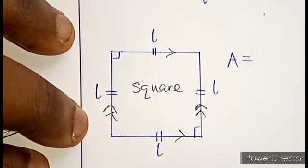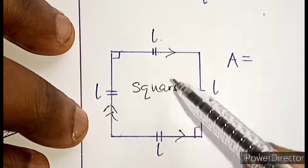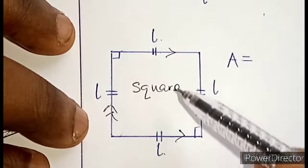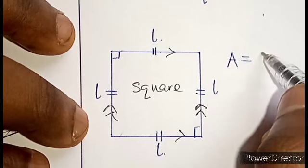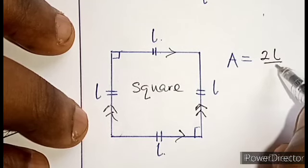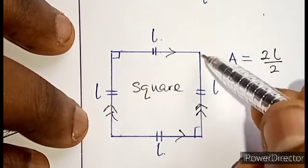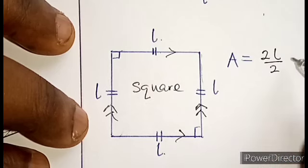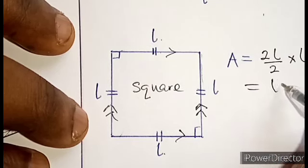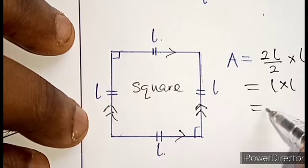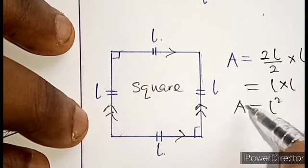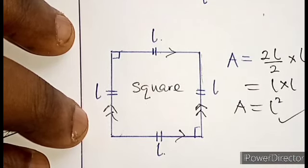If you want to bring that into a square, you discover that the top and bottom are both L and L. And when you add that together, you have 2L divided by 2 times the perpendicular height which happens to be L in this case. So we have L times L, and that is L square. And you see area of a square is L square.